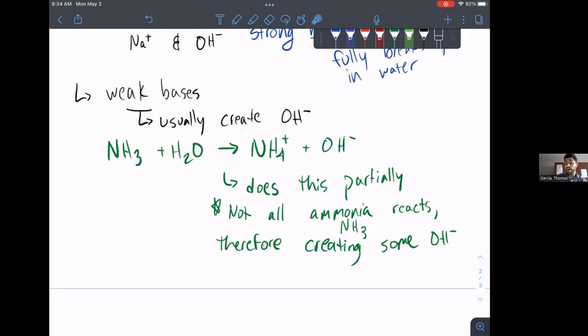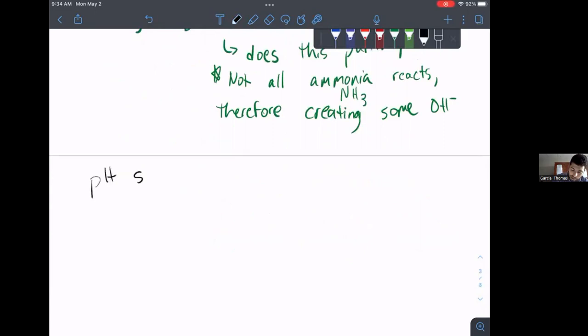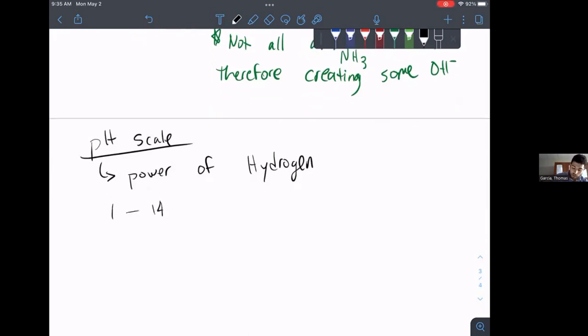All right. The last thing I want to talk about is our pH scale. Our pH scale actually refers to the power of hydrogen. Because this is all named after hydrogen, the ion that we produce in water. And our pH scale ranges from 1 to 14. And if we go 1 to 7 to 14, we have this part, which is below 7, which is our acids. This part, which is above 7, which is our bases. Or alkaline. And then you might be saying, well, what's 7? 7 is neutral.